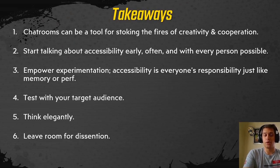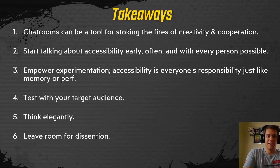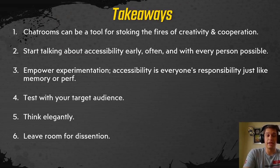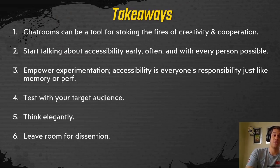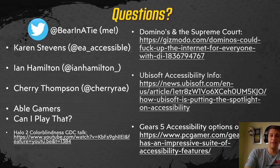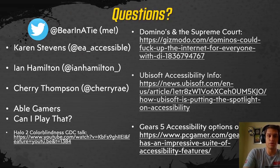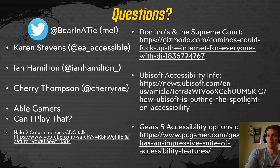So those are my stories. As a quick recap: chat rooms keep accessibility in the foreground; talk early, often, and with everyone; empower experimentation; test often; think elegantly; and leave room for dissension. Here are some of the articles I used either for this talk or when discussing features and approaches with the team, in addition to my Twitter handle and those I frequently communicate with about accessibility options. Thank you for listening to my talk.